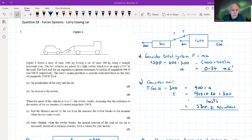Figure four shows a lorry of mass 1600 kilograms towing a car of mass 900 kilograms along a straight horizontal road. The two vehicles are joined by a light tow bar at an angle of 15 degrees.